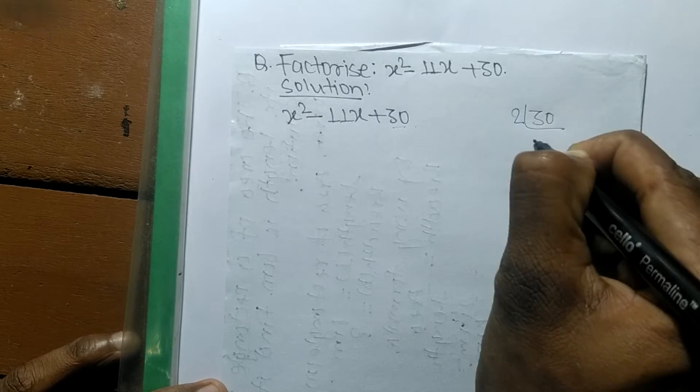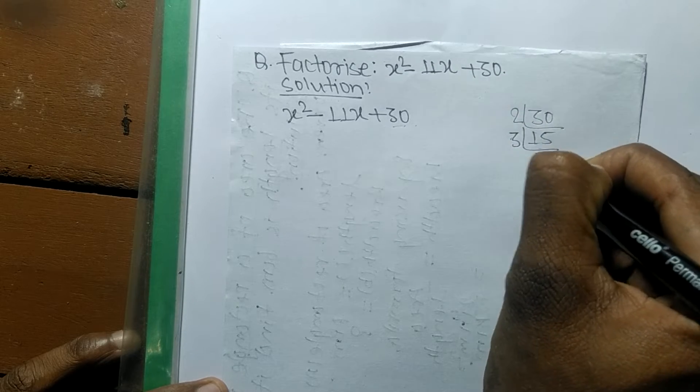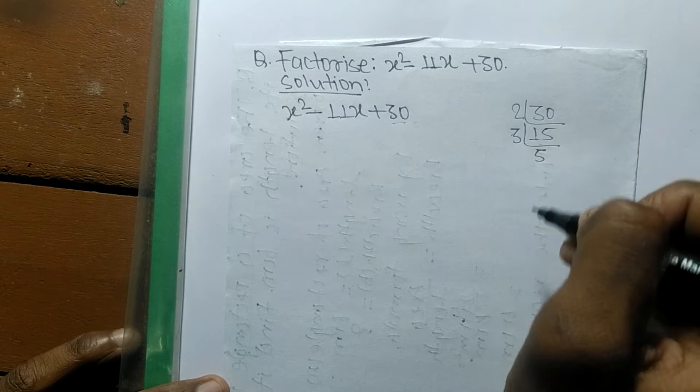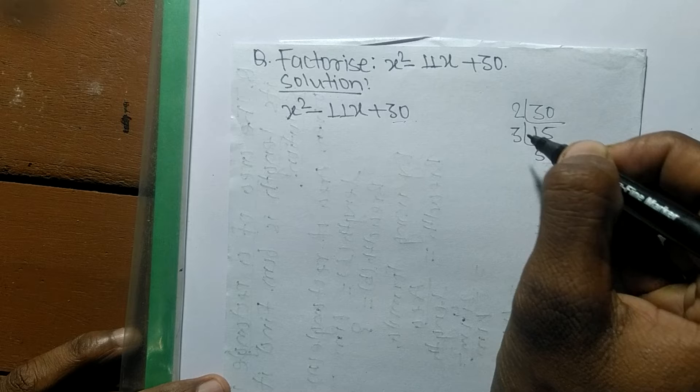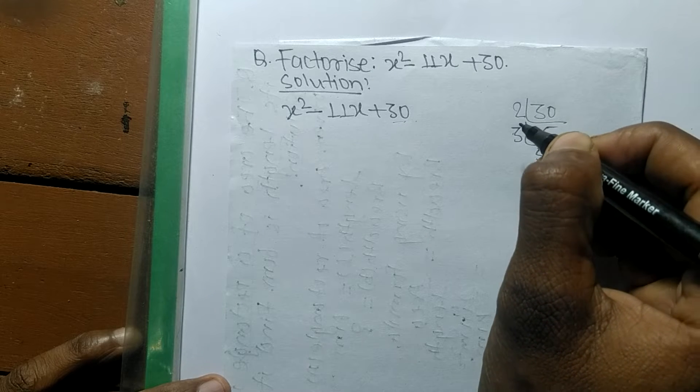30 equals 2 times 15, which equals 2 times 3 times 5. So we got the numbers 2, 3, and 5. By multiplying within these numbers, we have to take such numbers that by adding we get the middle term.